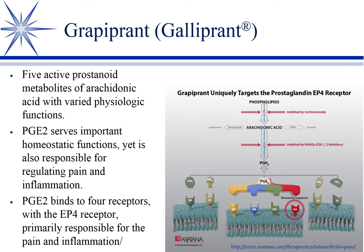We're going to switch now to arthritis, degenerative joint disease — again a lot of inflammation going on. I'll talk to you about grapiprant, also called galloprant. If this name is not familiar to you, don't be surprised because it's not on the market yet.